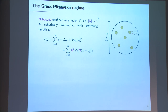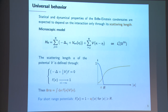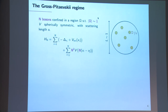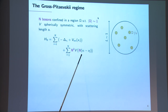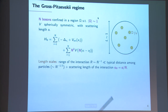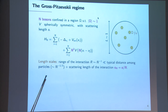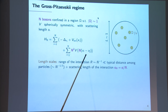What I would like to discuss today is how we can recover that the thermodynamic functions of bosons in condensate depend on the interaction only through the scattering length, in the Gross-Pitaevski regime. In this regime, we consider N bosons confined in a region of order 1, and the potential is rescaled so that its range is n to the minus 1, much smaller than the typical inter-particle distance n to the minus one-third. By rescaling the scattering equation, the scattering length of this rescaled potential is just the scattering length of the original potential divided by N.